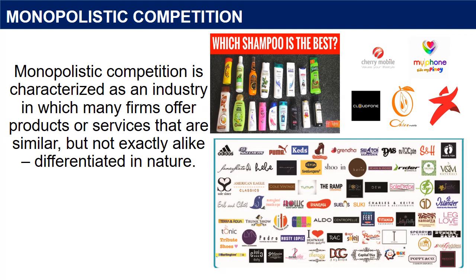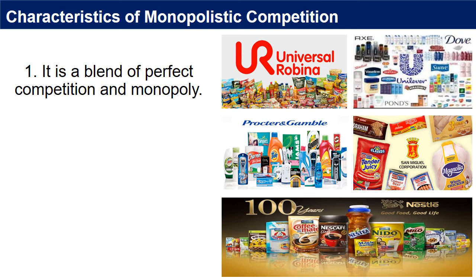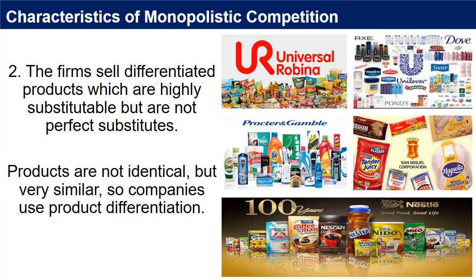As consumers, we want to have varieties of products to choose from. Characteristics of monopolistic competition: 1. It is a blend of perfect competition and monopoly. Just like perfect competition, there are many similar products available in the market, and there are many large companies which can influence the price by creating a product identity. 2. The firms sell differentiated products which are highly substitutable but are not perfect substitutes. Products are not identical but very similar, so companies use product differentiation.